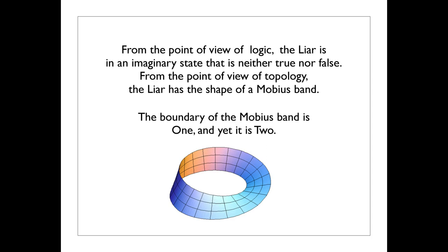But, of course, in the topology, there is no paradox. It's only in the interpretation that there's a paradox. In fact, in the topology, there is the flexibility in motion and ability to work with the Mobius band that makes it a mathematical object of study and not a paradox at all. And the same could be true of paradoxes if you take them in the right way. So from the point of view of logic, the liar is in an imaginary state that is neither true nor false. From the point of view of topology, the liar has the shape of a Mobius band.